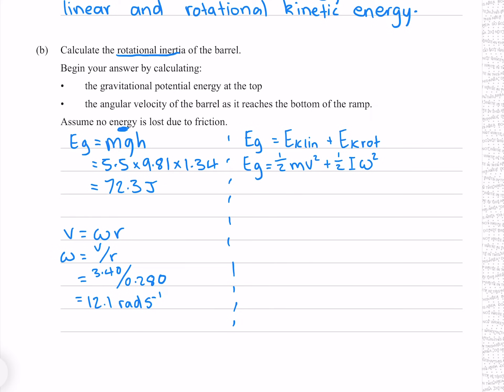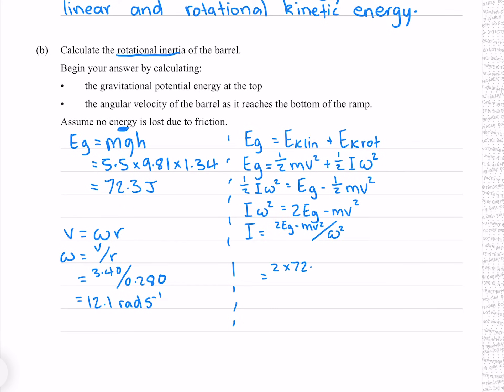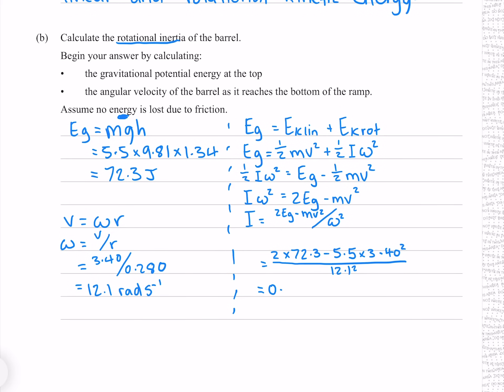To solve for I: subtract ½mv² from both sides, multiply both sides by 2, and divide both sides by ω². Putting our numbers in gives 0.553 kg·m² to three significant figures.